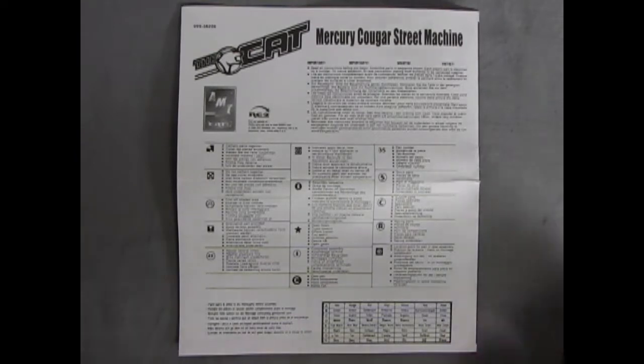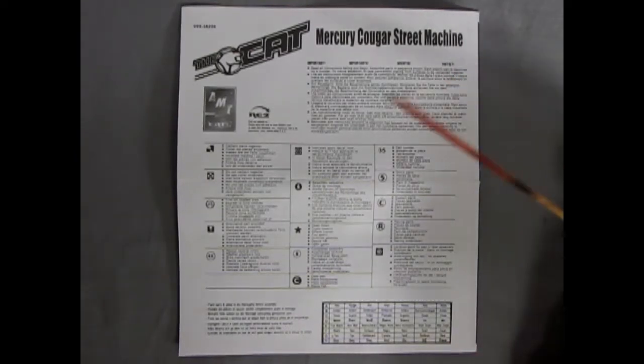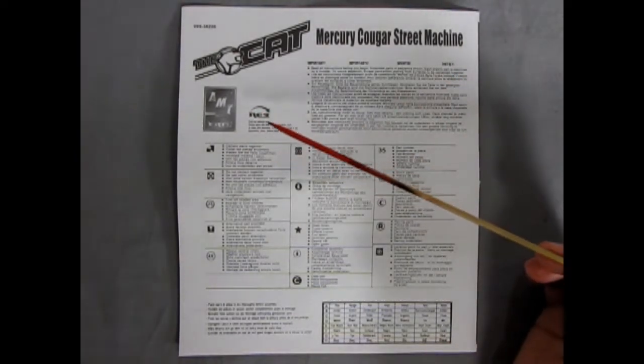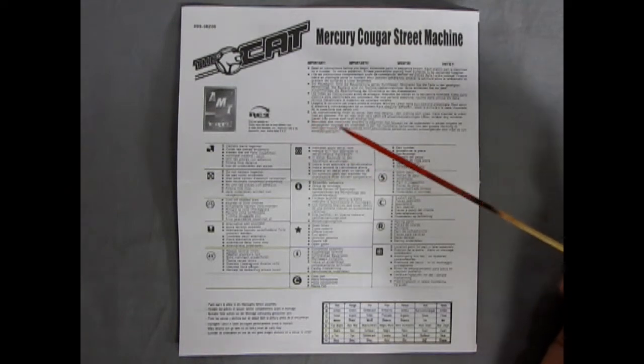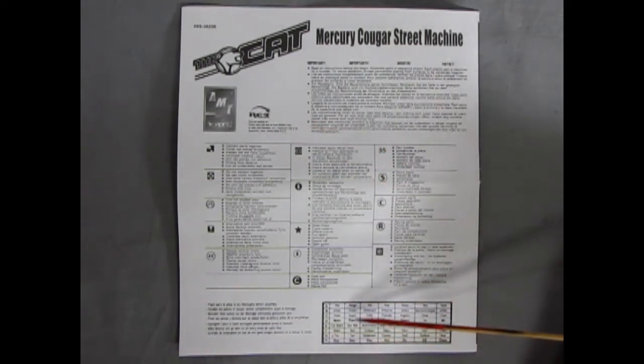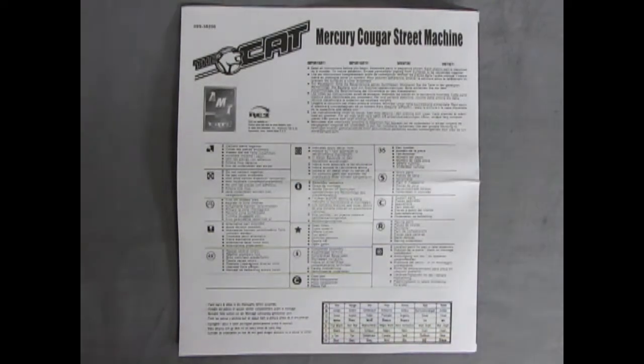Here we have the instruction sheet for Mercury Cougar Street Machine. This one was by AMT Ertl under RC2 so it is from a little while ago. Here we have a paint chart down below to show all the colors that we need to build this kit.